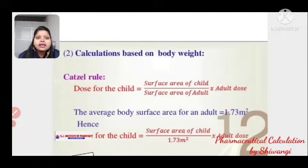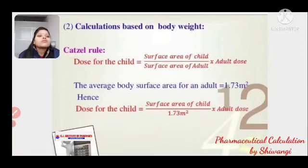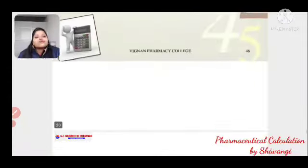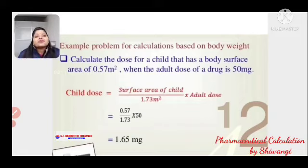Catzel (Cowling) rule is based on body weight and surface area: Dose for child = Surface area of child / Surface area of adult × Adult dose. The average adult body surface area is 1.73 m². Example: Surface area of child = 0.75 m², adult dose = 50 mg. Dose = 0.75/1.73 × 50.